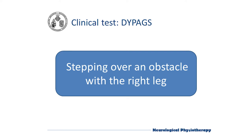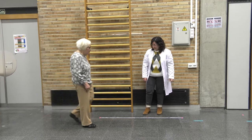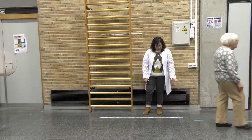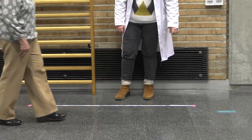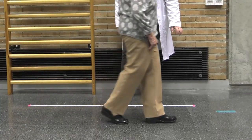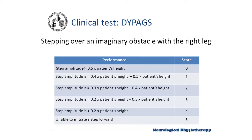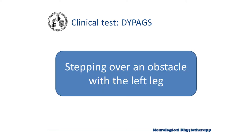Stepping over an imaginary obstacle with the right leg, we ask the patient to step as high as possible while walking down the corridor. A tape measure is marked on the ground to record the length of the step. To assign a score, we consider the height of the patient multiplied by the indices indicated in the table — the longer the step, the lower the score. The same assessment is then repeated with the left leg.